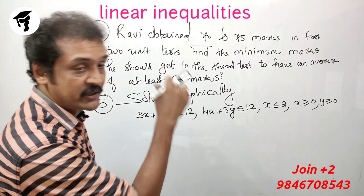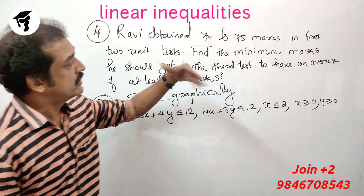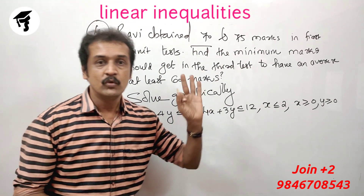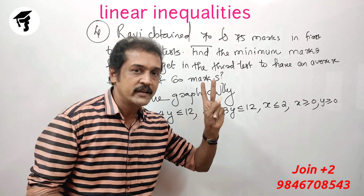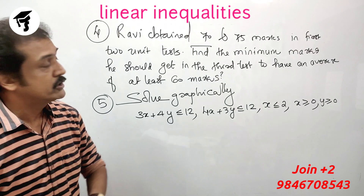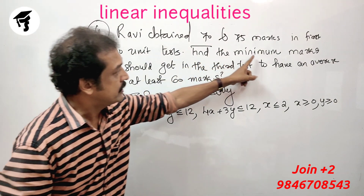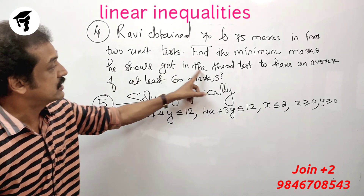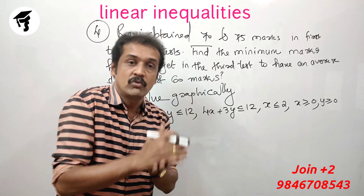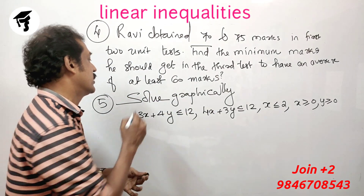Ravi obtained 70 and 75 marks in the first two unit tests. Find the minimum marks he should get in the third test to have an average of at least 60 marks.